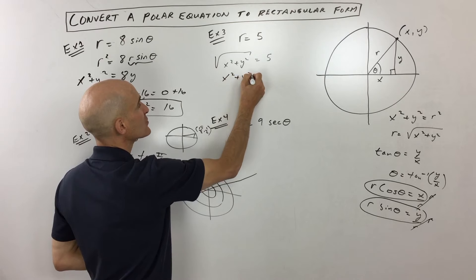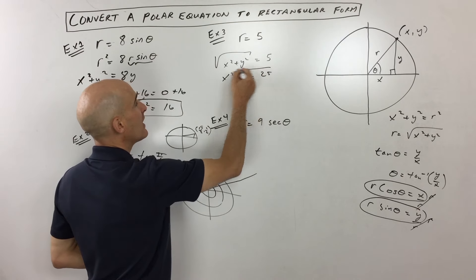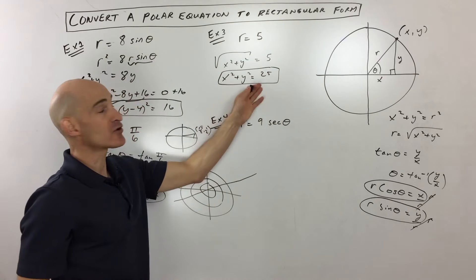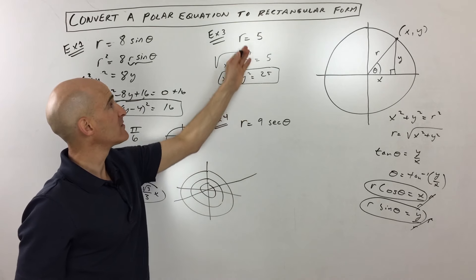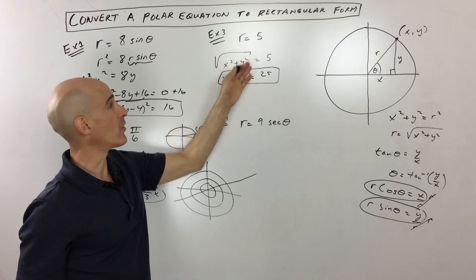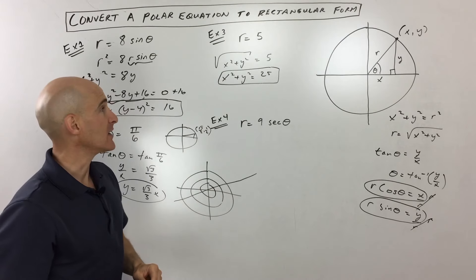So if we square both sides, we get x squared plus y squared equals 25. And you can see this is the equation of a circle in rectangular form. This is the equation of a circle in polar form. Same graph, just two different ways of writing it.